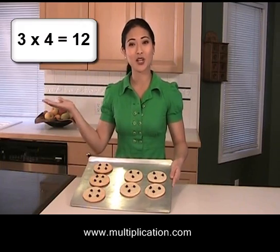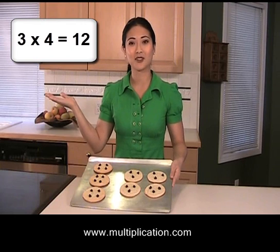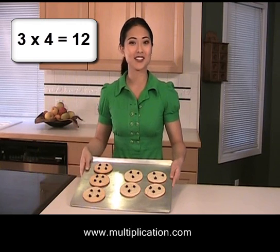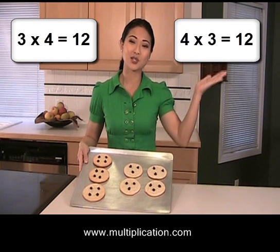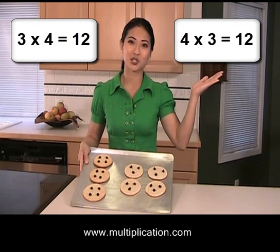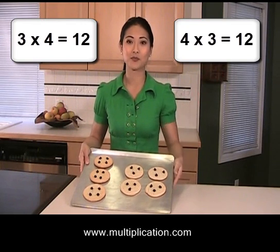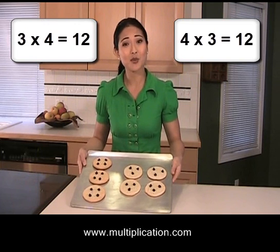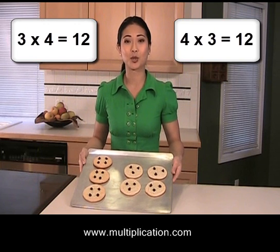So 3 times 4 equals 12, and 4 times 3 equals 12. And that's the commutative property of multiplication.